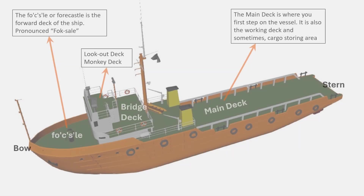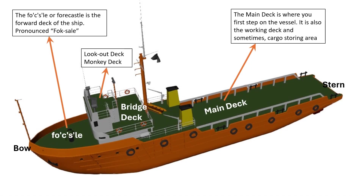A vessel is divided into many parts and they all have different names. The front end of the vessel is called the bow. The front portion of the deck is called forecastle, and it is pronounced as foxhole.